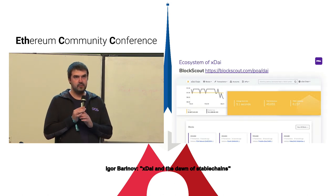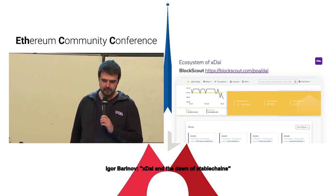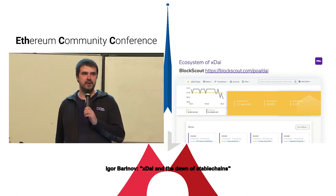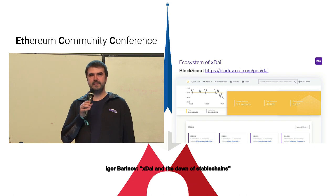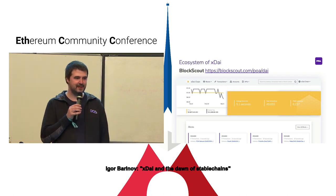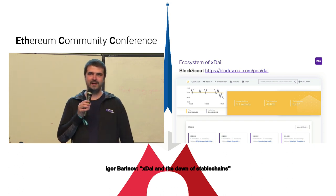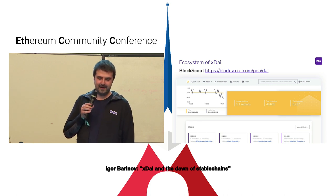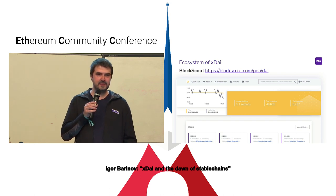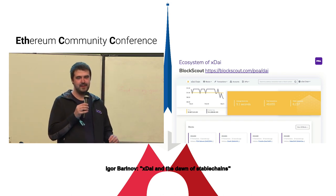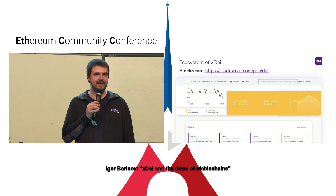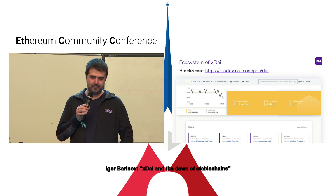At POA, we developed an open-source blockchain explorer called Blockscout. This project solves the problem of centralized services in the Ethereum ecosystem like Etherscan, where it's hard to get the same experience for sidechains. We built a full-featured copy of Etherscan and now support it for xDai and eight more networks, including Ethereum Classic. Anyone who wants to use it can install it and get a full-featured blockchain explorer.